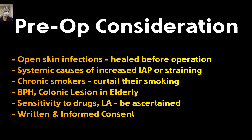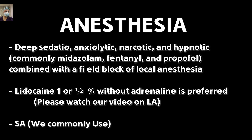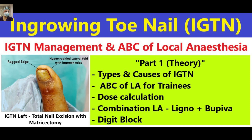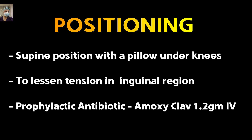In our institute we follow spinal anesthesia, though the Lichtenstein Hernia Institute uses local anesthesia with anxiolytics or sedation — typically lignocaine 1% or 0.5% with or without adrenaline. I advise viewers to watch our detailed video on local anesthetics, available free on our YouTube channel and app, covering dose calculation, mixture preparation, and administration. Regarding positioning: always place a small pillow under the knees, flexing them 10 to 15 degrees. This decreases tension at the groin region and makes surgery easier and better for the patient.